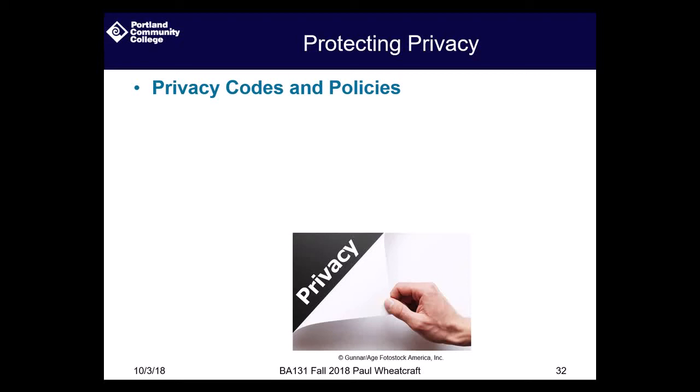Each organization needs to have a privacy code and policy. Over the last few months you should have been notified by all the different places you do business with online — your bank, Amazon, social networking sites — reminding you of what they gather, the cookies they store on your computer, and so on. This has come about largely because of the issues with Facebook. One privacy model is called the opt-out model: even though you didn't request a newsletter, you can always tell the organization to stop sending it to you.